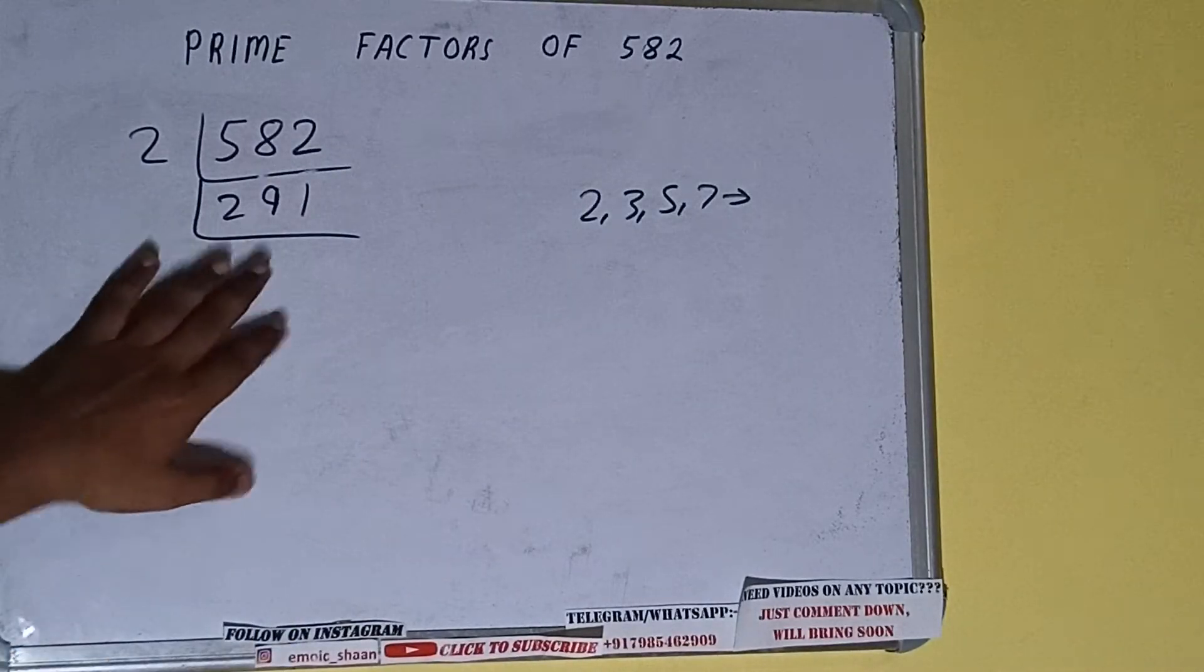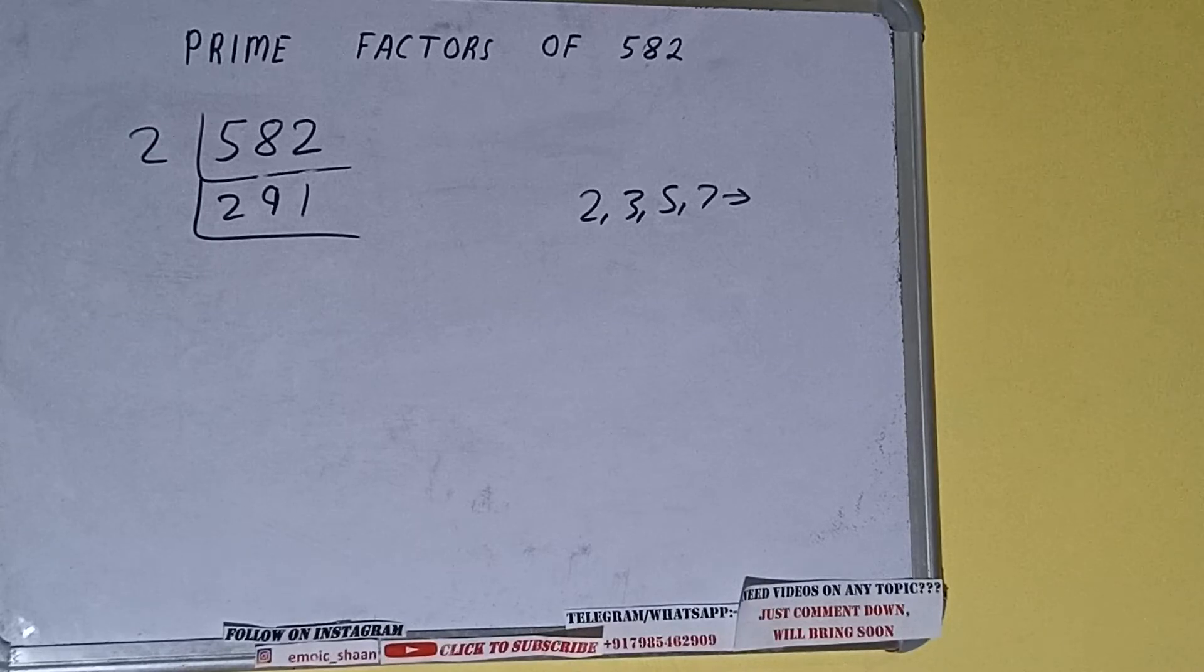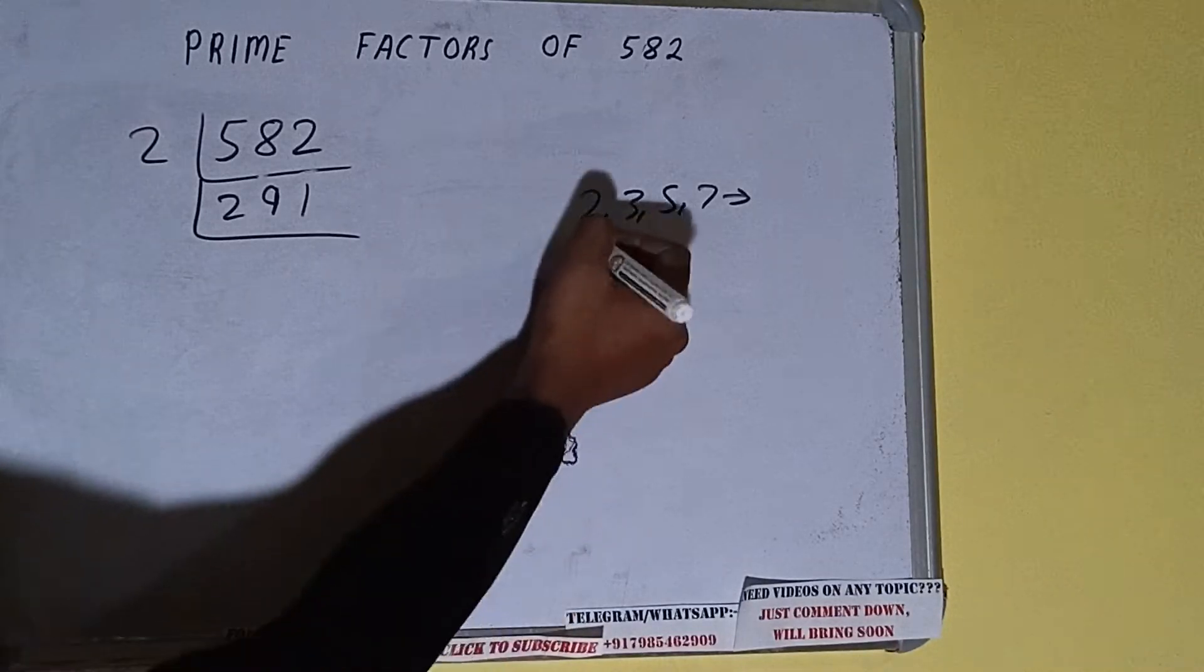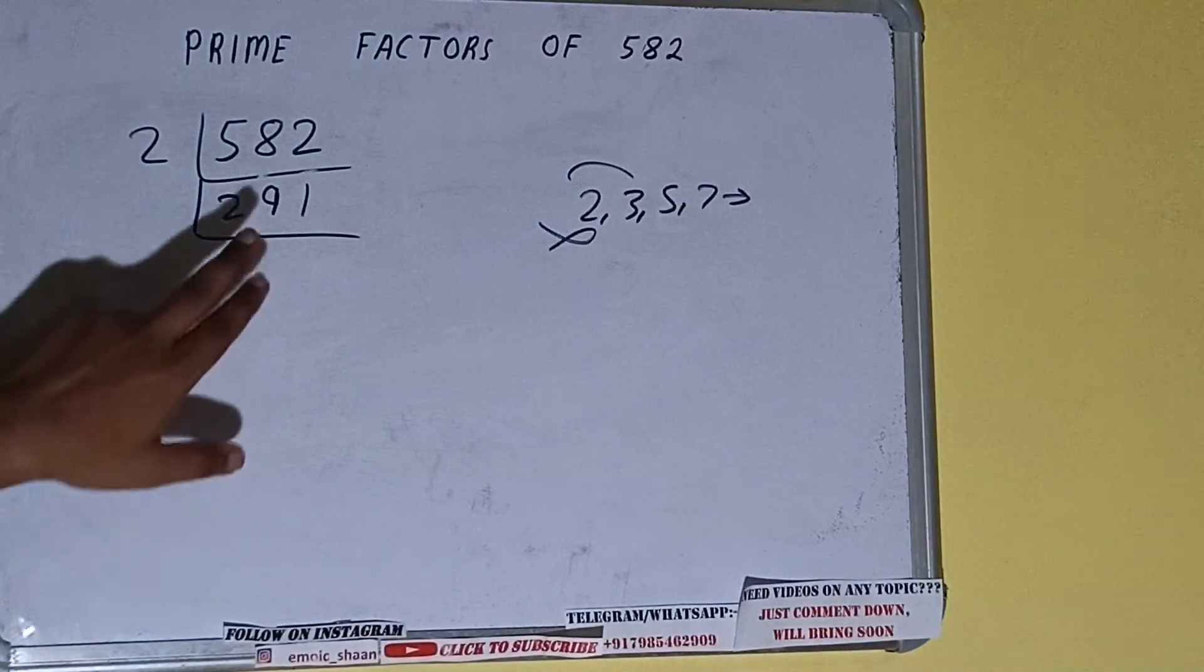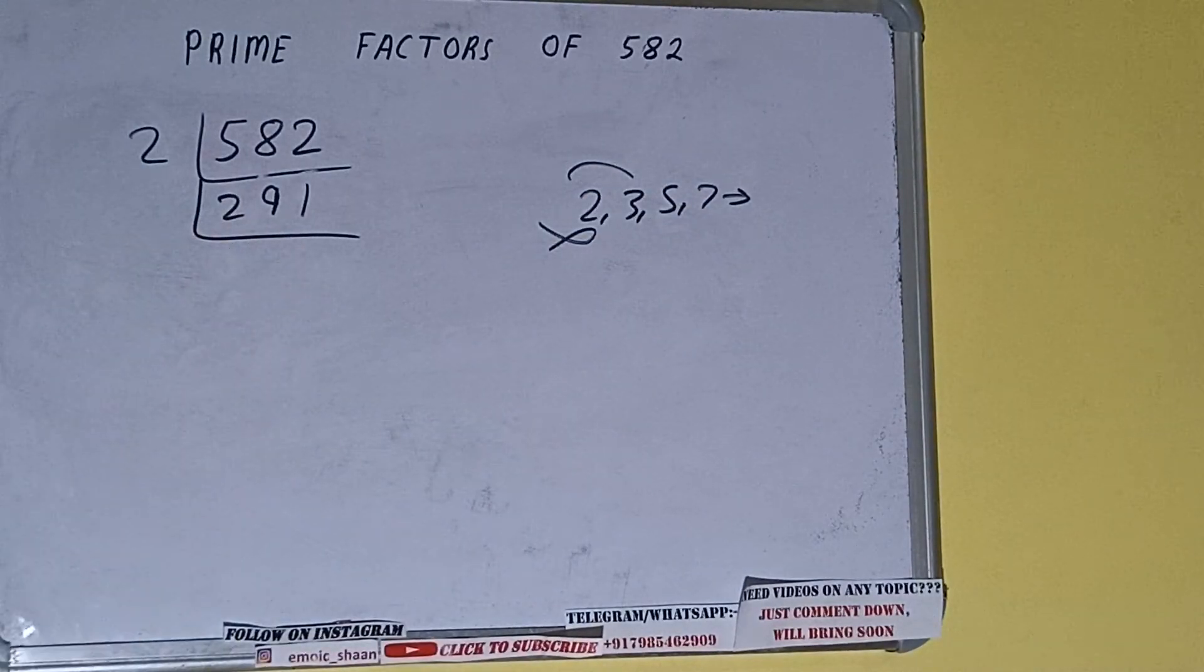Is 291 further divisible by 2? The answer is no, because the number is odd. So we'll check with the next lowest prime number, that is 3. 3 into 97 is 291, so it is divisible. Divide it and we'll be having 97.